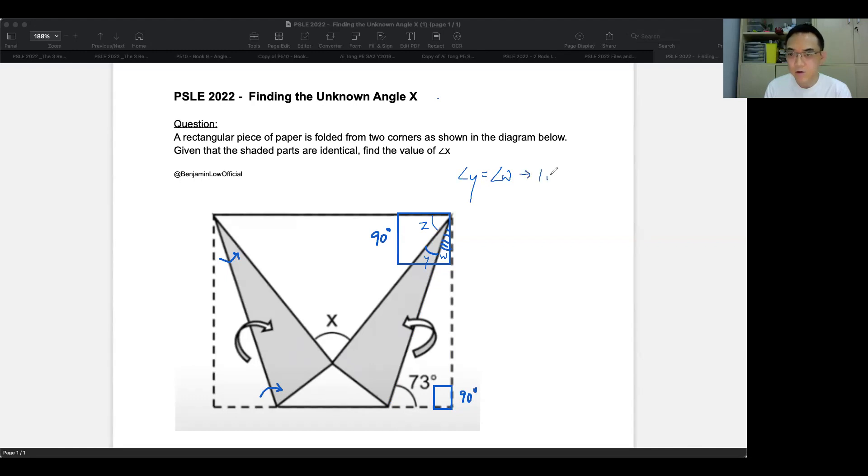is actually found by taking 180 minus 73 minus 90. And this will give us 17 degrees. So put it for all of them.